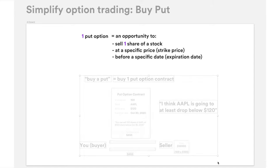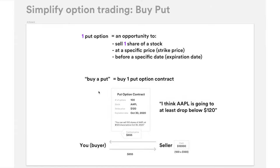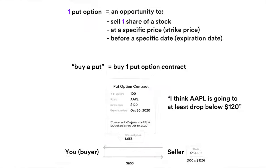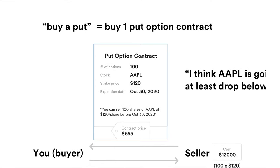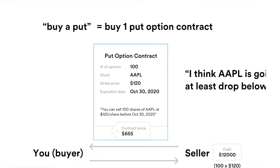When you hear the phrase 'buy put' from Wall Street, finance media, or friends who trade options, it means you're buying one put option contract. In option trading, contracts always trade in blocks of 100, so each contract has 100 options. Buy two puts and you have two contracts, 200 options.